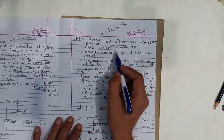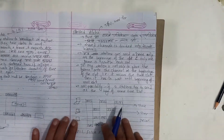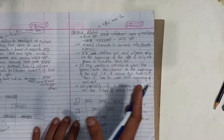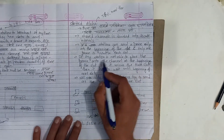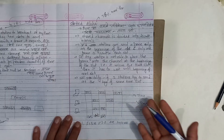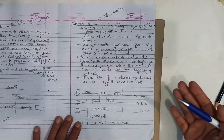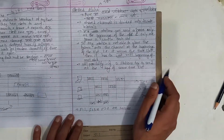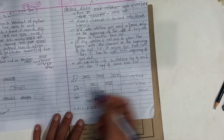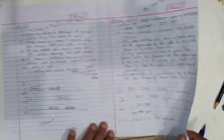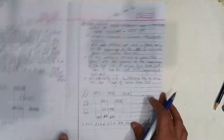In slotted ALOHA, a station can only send a frame at the beginning of a time slot, and only one frame is sent per slot. If any station is not able to place the frame onto the channel at the beginning of the slot, it must wait until the beginning of the next slot. However, there is still a possibility of collision if two stations try to send at the beginning of the same time slot.